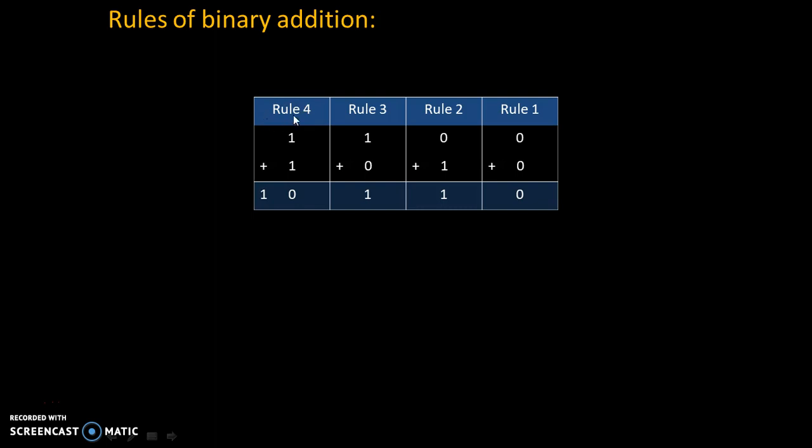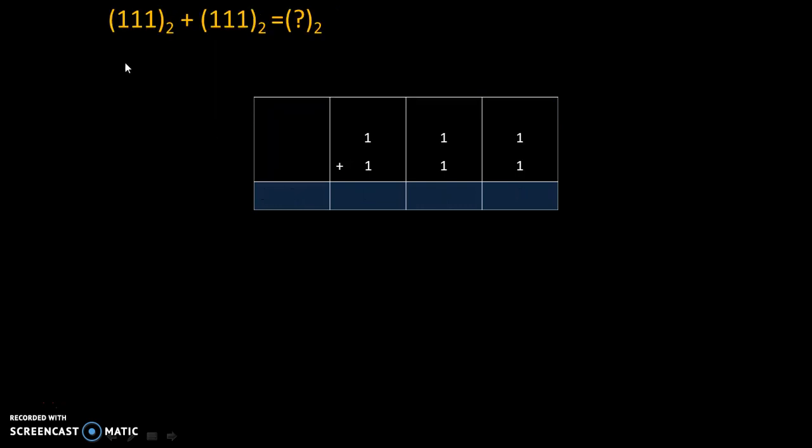That's why rule number 4 is important. In binary, 1 plus 1 is 0 with carry 1. We will call this answer as 0 and this 1 as carry. Once we know these 4 rules, we can do any addition of binary digits. So let's do that.